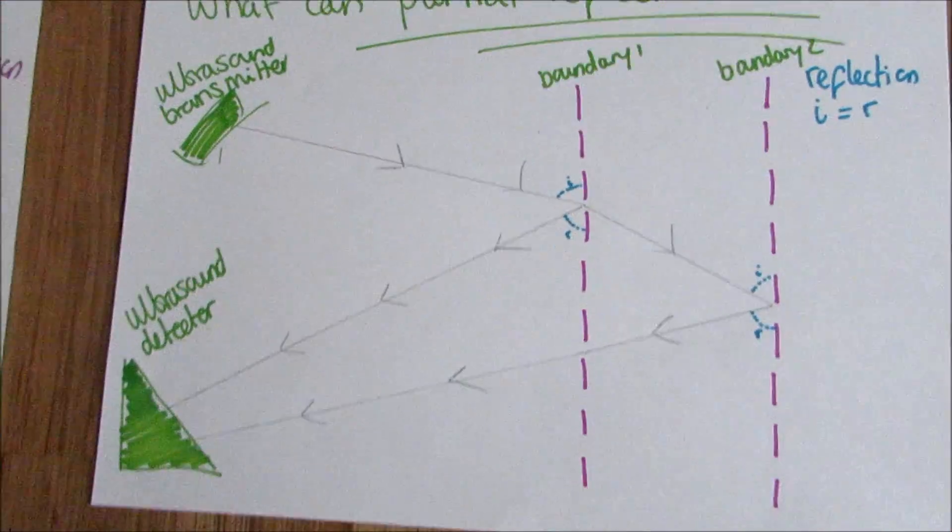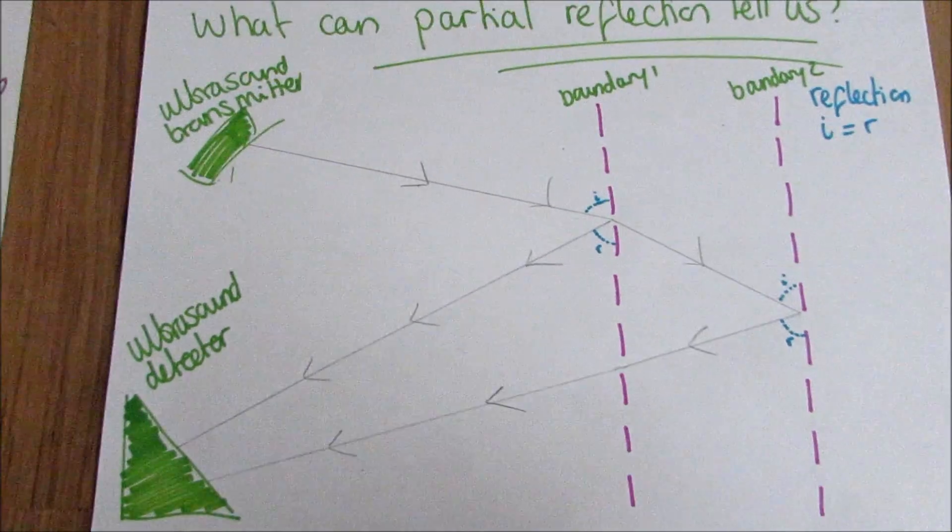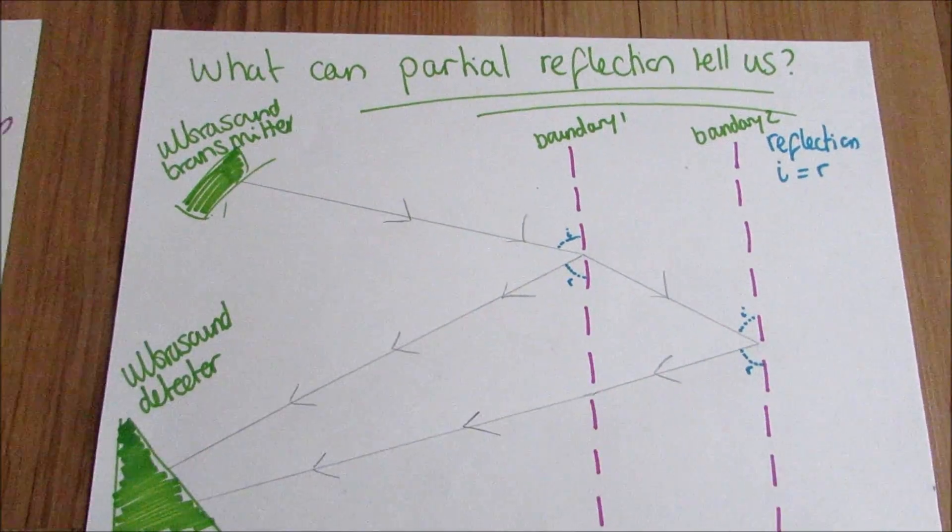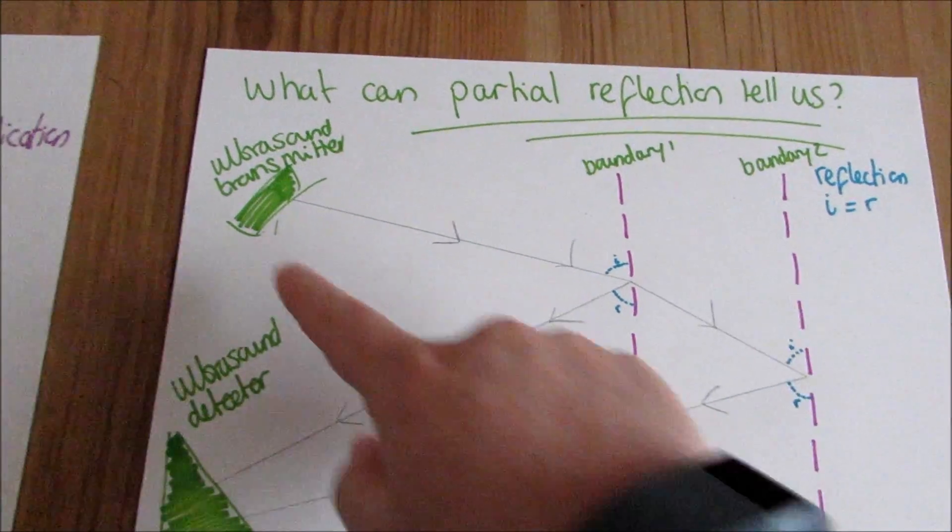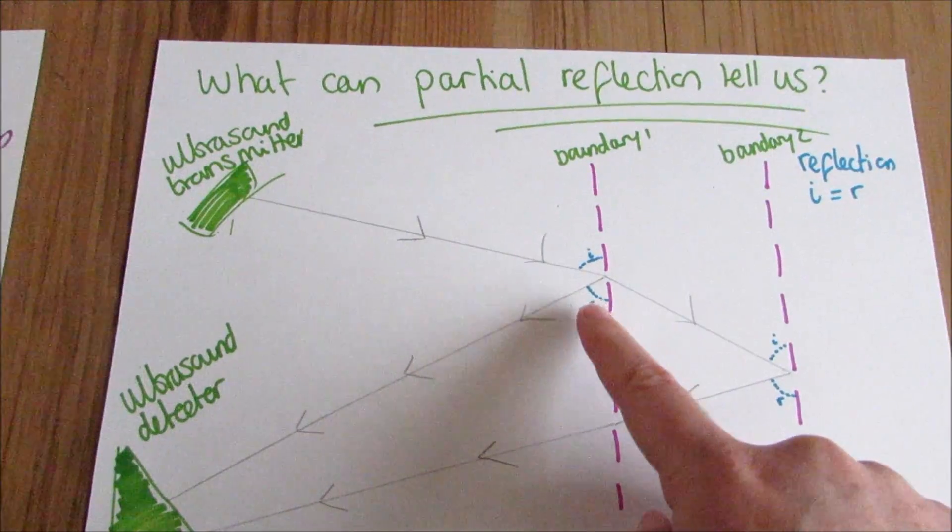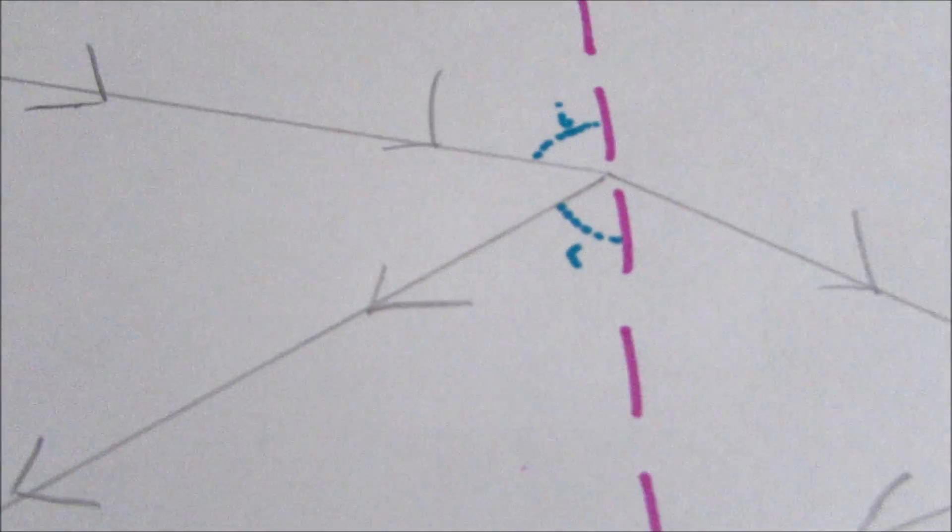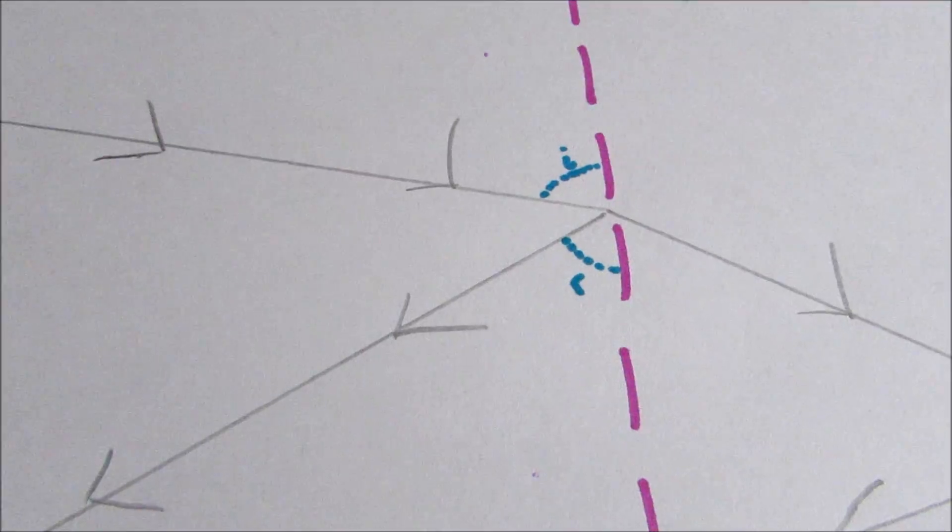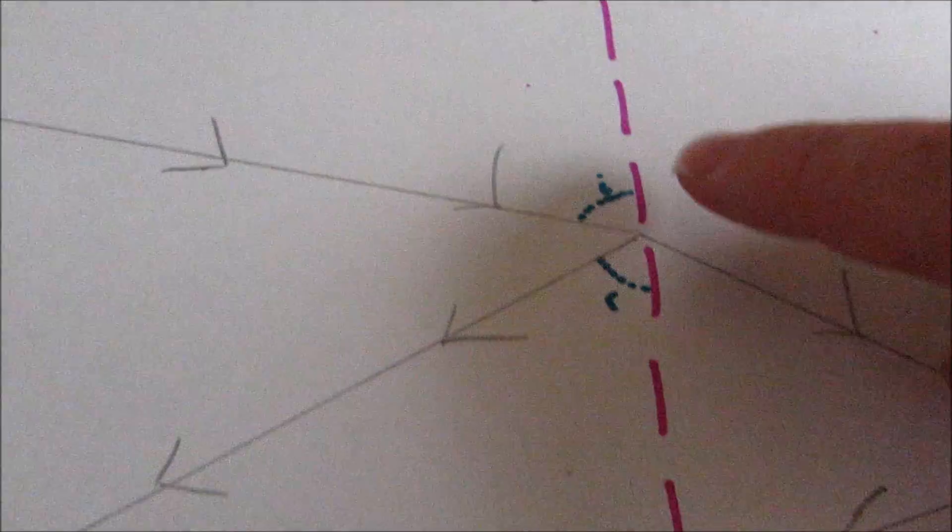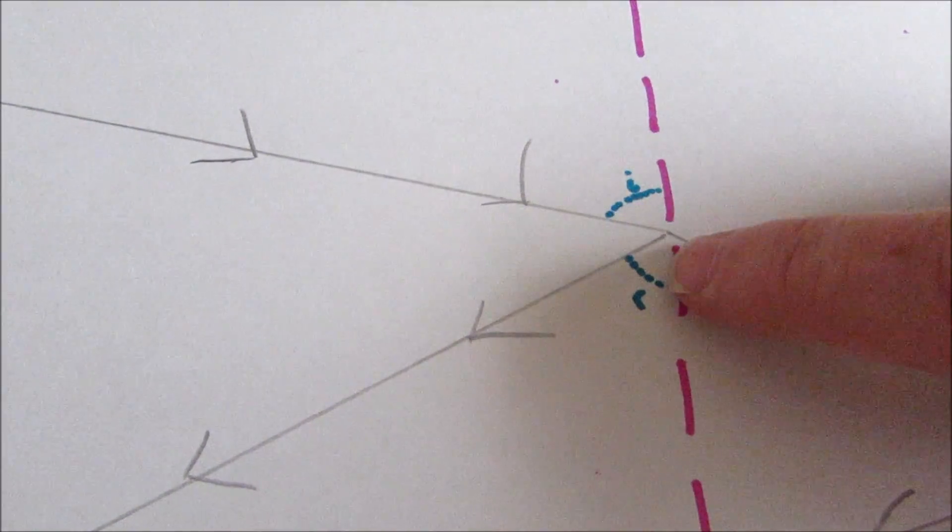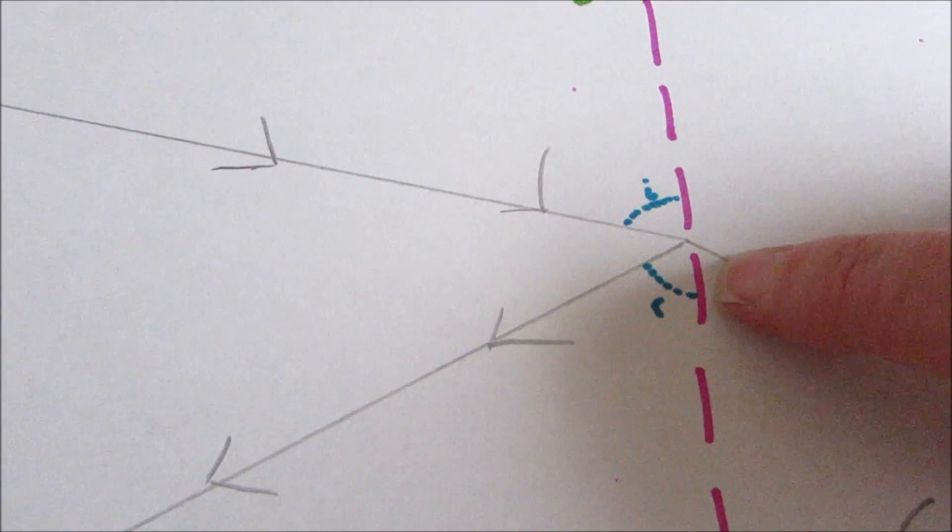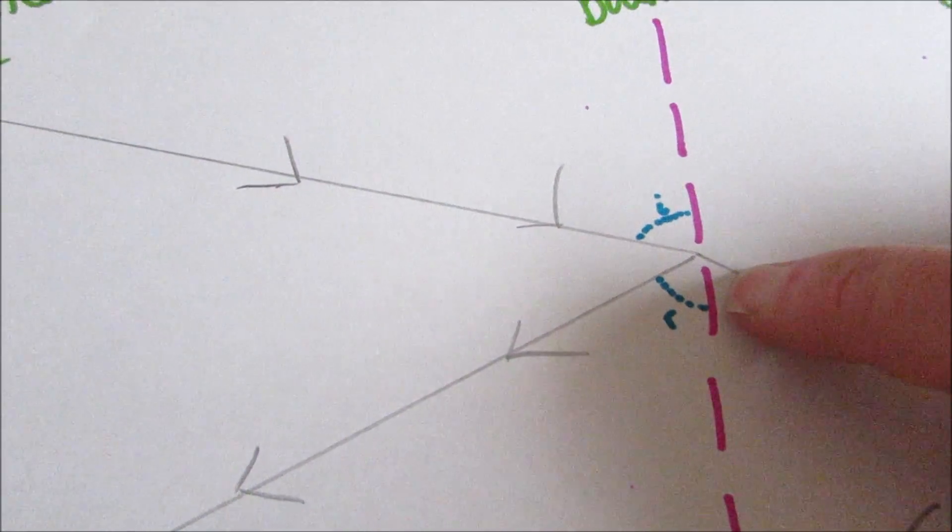This is what a diagram of partial reflection will look like. You've got your ultrasound transmitter up here, and we've got two different boundaries. When the ultrasound is sent out the transmitter, at boundary one, we have partial reflection. Some of it is reflected back, and some of it is transmitted and refracted. You'll notice here that I've got my angle of incidence and my angle of reflection. And that the light doesn't continue in a straight line. It is reflected, so it changes direction.